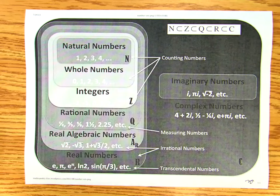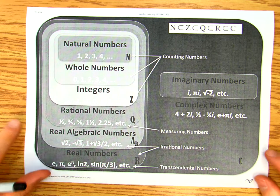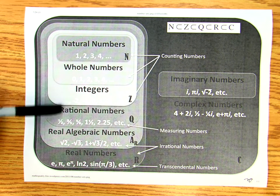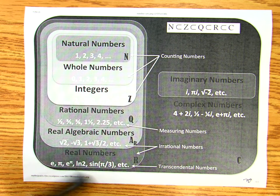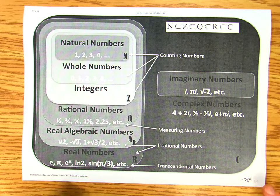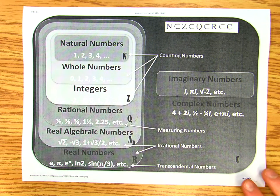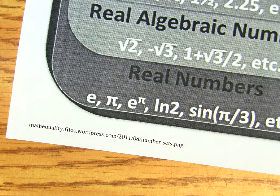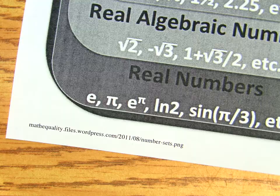I want to do a video today on number sets and classification of numbers. Here's a standard diagram showing natural numbers, whole numbers, integers, rationals, real algebraic numbers, real numbers including transcendentals, imaginary numbers, and complex numbers. This is pretty common on the internet - I got this from mathequalityfiles.wordpress.com.